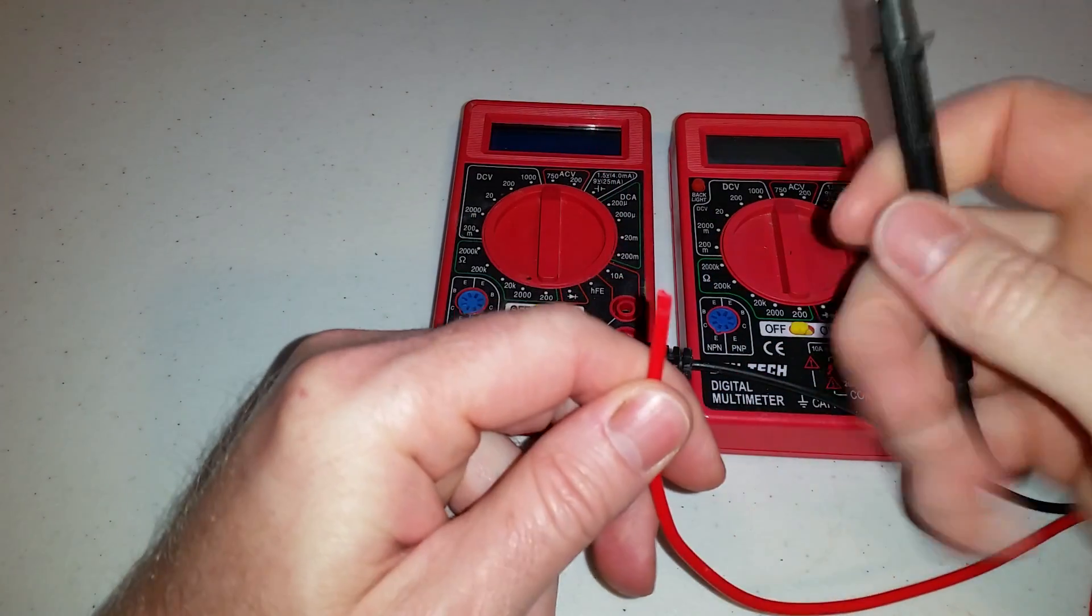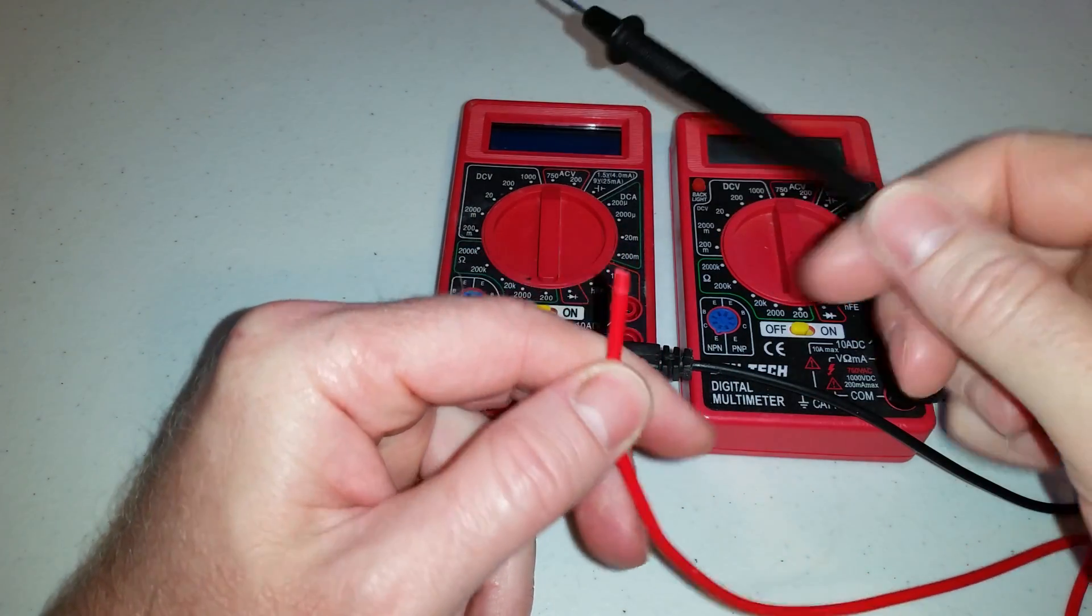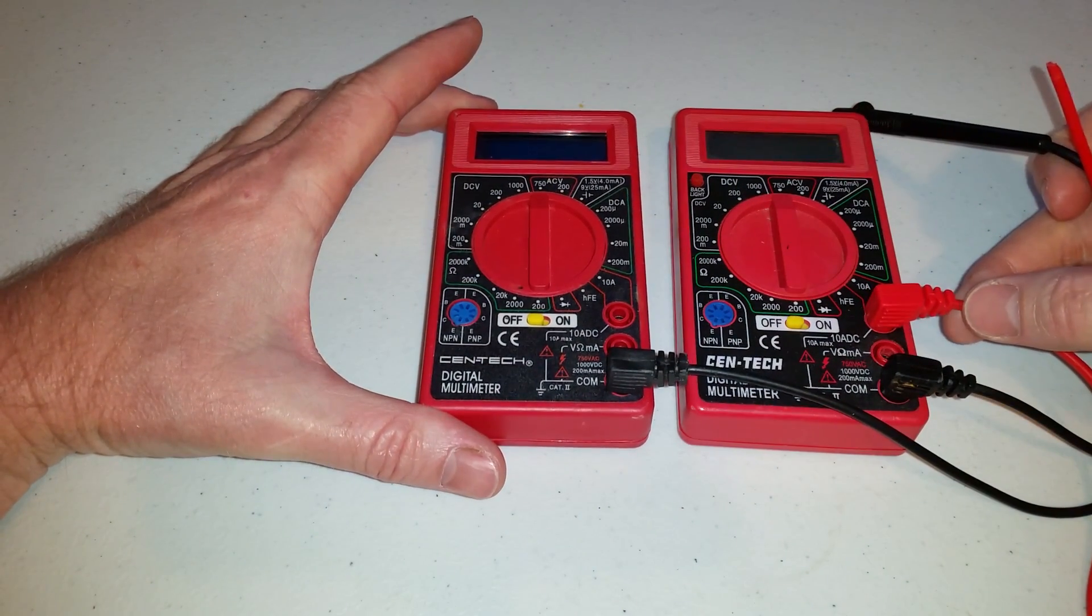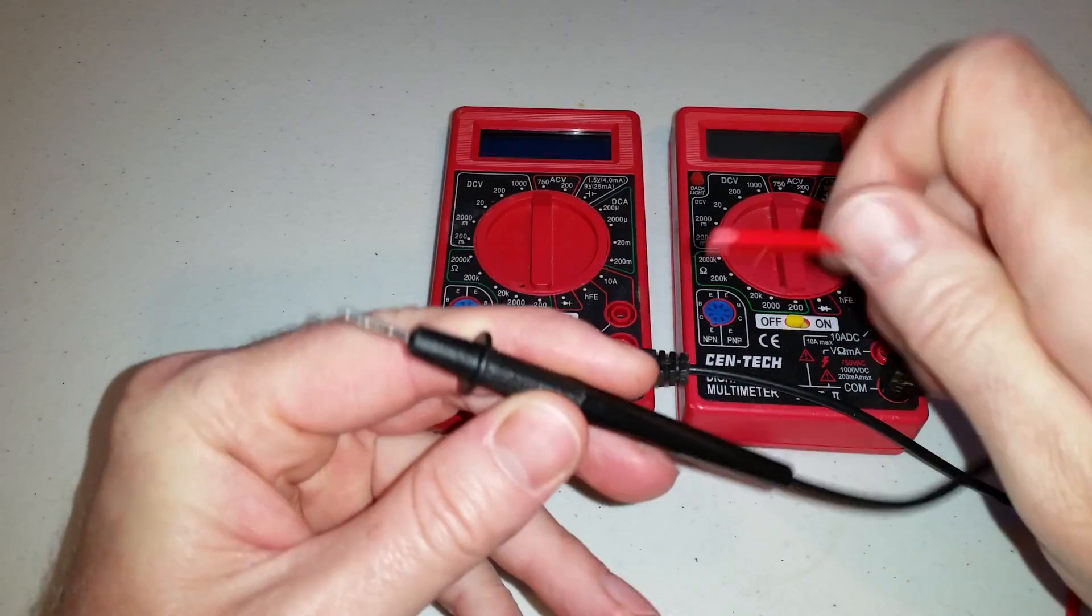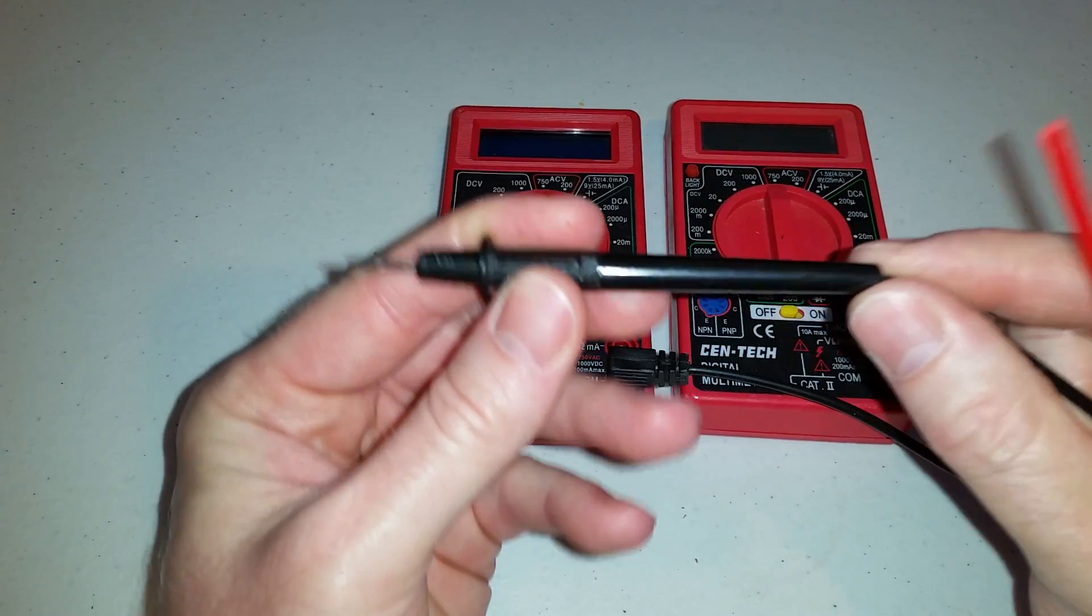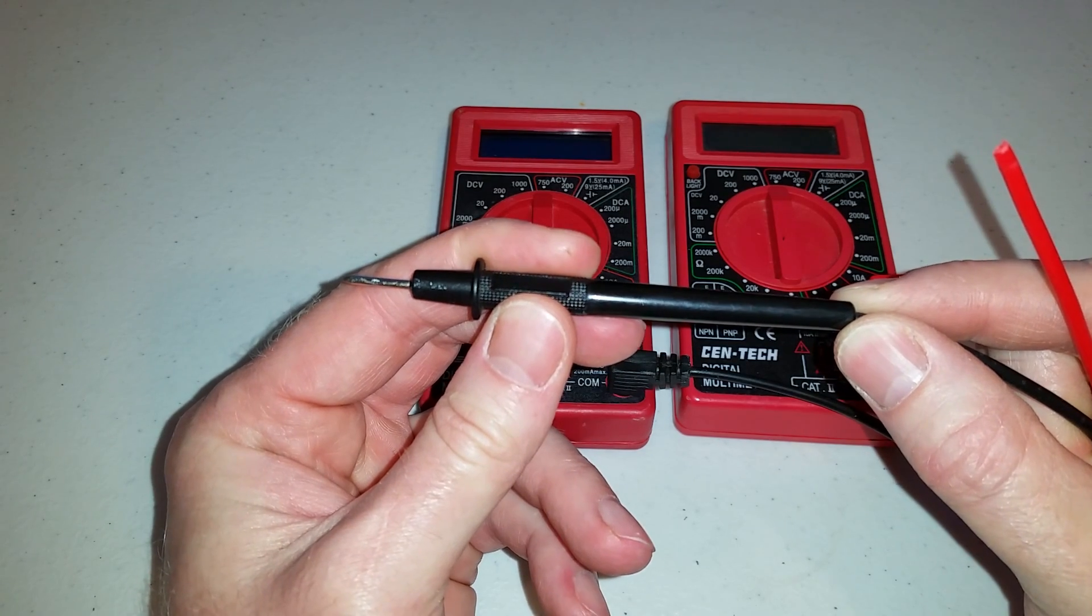The problem I'm having is the leads break off. It happened on both of these, both the positive terminals, the little test probe leads broke off. The cheapest I've found for these test leads are like $7, anywhere from $7 to $14.